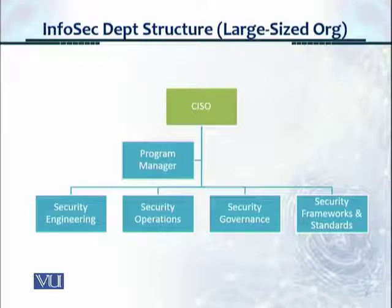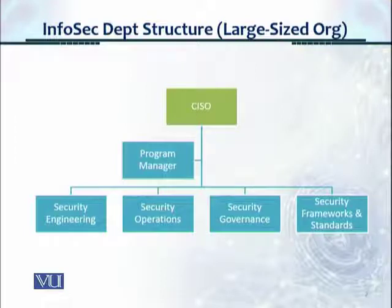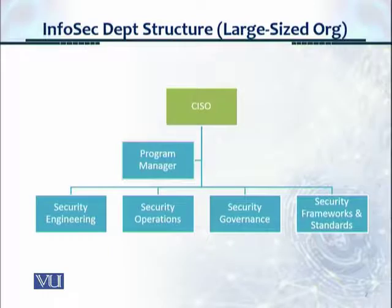You have four different units. There's security engineering, which is about having domain knowledge or expertise belonging to a specific area. Security operations covers day-to-day activities like managing an antivirus or running a vulnerability management scan. There's security governance — policies, procedures, training awareness — and security frameworks and standards like ISO 27001, COBIT, or PCI.